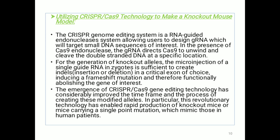We can also utilize CRISPR-Cas9 technology to make a knockout mouse model. The CRISPR genome editing system is an RNA-guided endonuclease system allowing the user to design a guide RNA (gRNA), which will target small DNA sequences of interest. In the presence of Cas9 endonuclease, the guide RNA directs Cas9 to unwind and cleave the double-stranded DNA at a specific location. For the generation of knockout alleles, microinjection of a single guide RNA into a zygote is sufficient to induce insertion or deletion in a critical exon of choice, causing a frameshift mutation and functionally abolishing the gene of interest. CRISPR-Cas9 has enabled the rapid production of knockout mice or mice carrying a single-point mutation which mimic those in human patients.